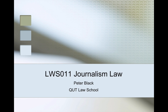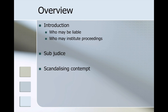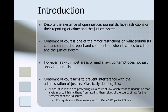This week we're going to look at contempt of court, which in many ways is the flip side to open justice. If you don't comply with the rules that the court sets out, you will find yourself in contempt of court. Some of those relevant rules relate to those principles of open justice. Today we'll have an introduction to contempt of court and look at various types, before focusing on sub judice contempt and scandalising contempt. Despite the existence of open justice, journalists do face restrictions on their reporting of crime and the justice system. Contempt of court operates as one of the major restrictions on what journalists can and cannot do when reporting and commenting on matters before the justice system.